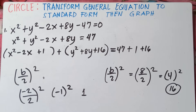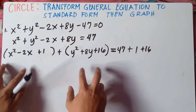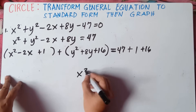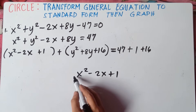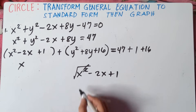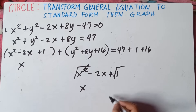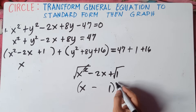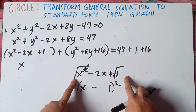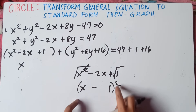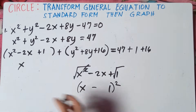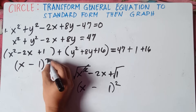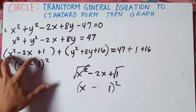Alright, now this is a perfect square trinomial — we make it into a square of a binomial by factoring. To factor x squared minus 2x plus 1: get the square root of the first term — square root of x squared is x. Get the square root of the last term — square root of 1 is 1. Copy the sign of the middle term, which is negative. Put a parenthesis and square it. So this factors as quantity x minus 1 squared. That is the factor of this perfect square trinomial.